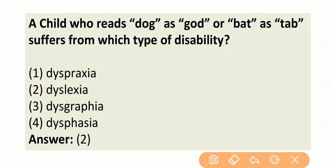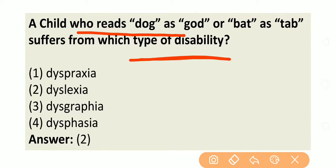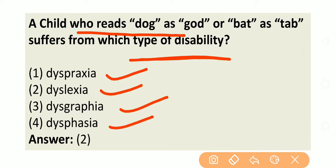Next question: a child who reads 'dog' as 'god' or 'bat' as 'tab' suffers from which type of disability? If a child is reading 'dog' as 'god,' they must be having some problem with the arrangement of letters.